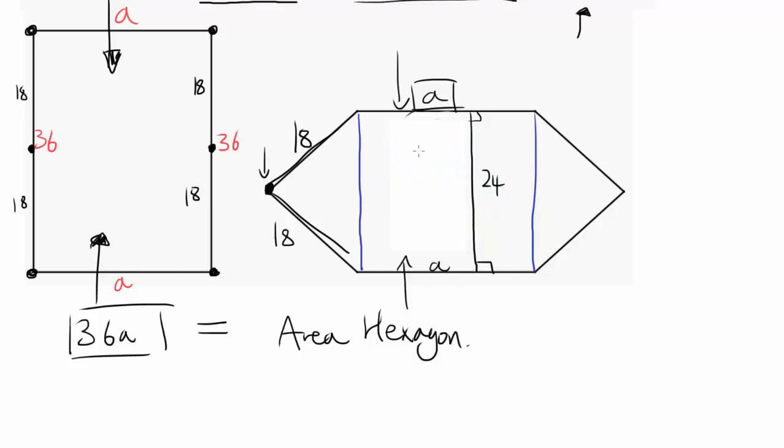And the area of the rectangle is easy to calculate. The base is A, height is 24. So area of the rectangle is 24A. And now we gotta find the area of each of these triangles. And you know that's 24 and that's 24.